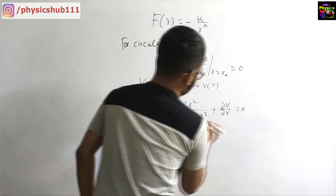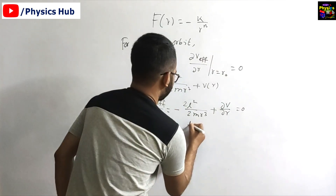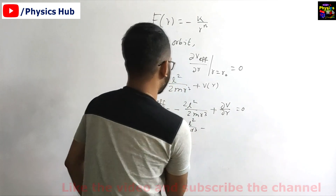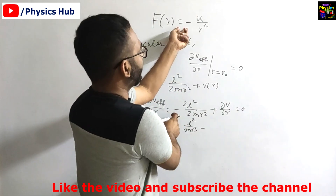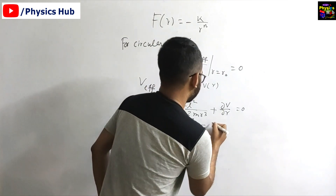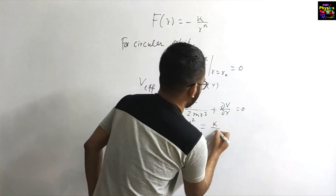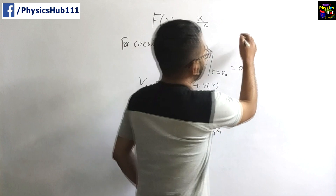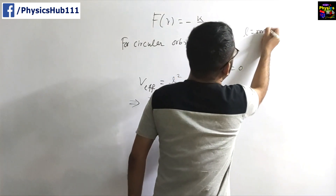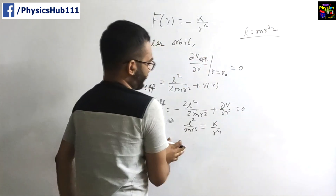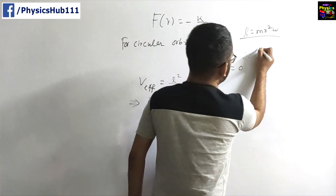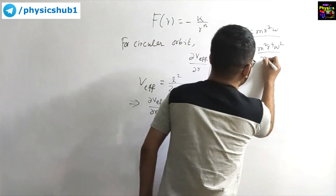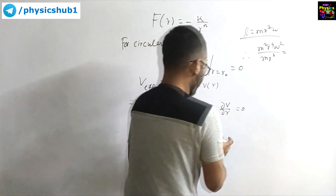Setting this equal to 0, we can write L² / (mr³) = k / r^n. So we are getting L² / (mr³) = k / r^n. Now you know that L = mr²ω. Substituting this: m²r⁴ω² / (mr³) = k / r^n, which gives mr·ω² = k / r^n.